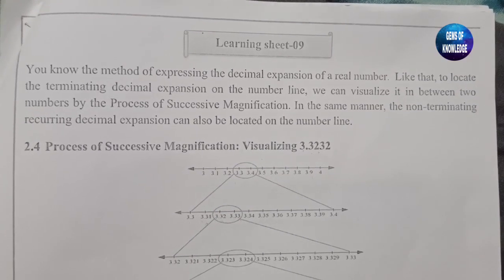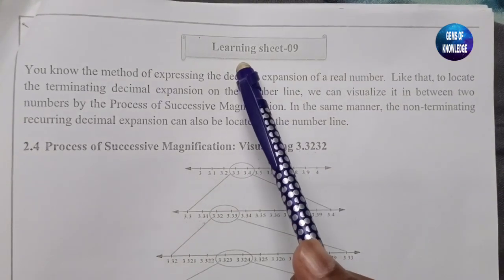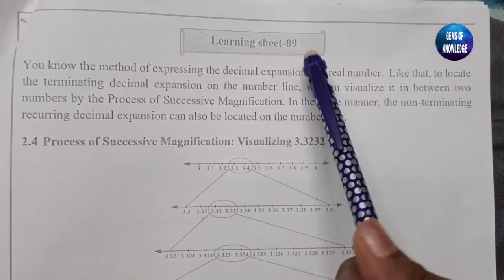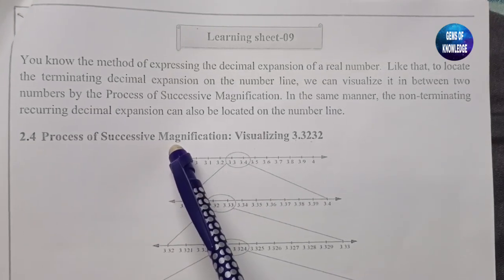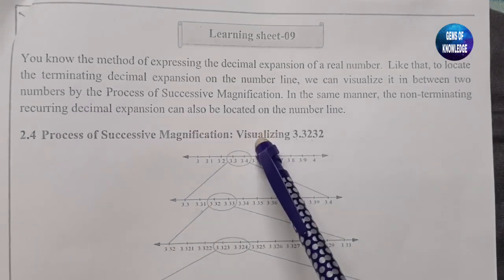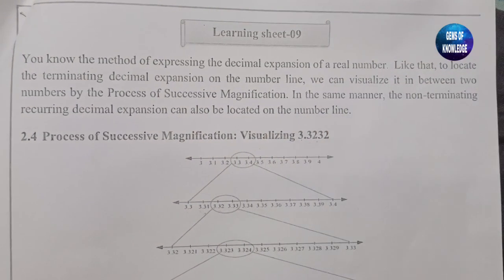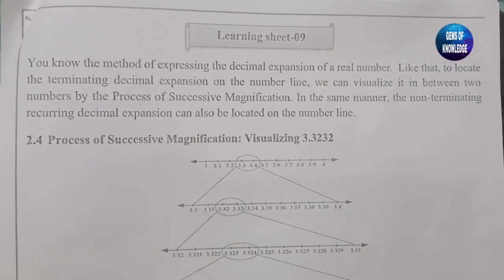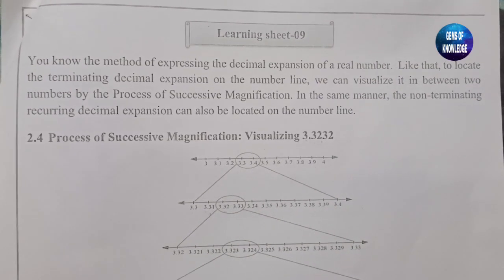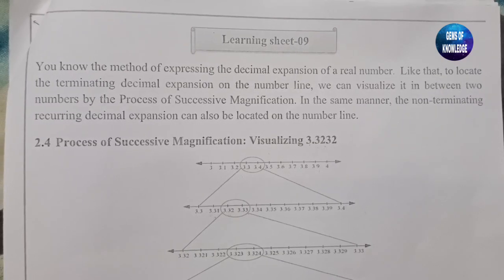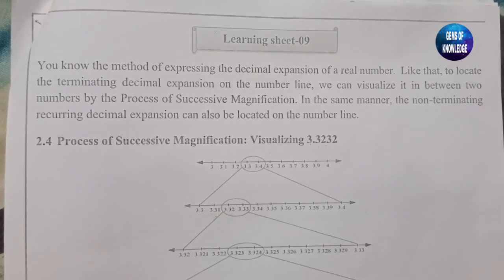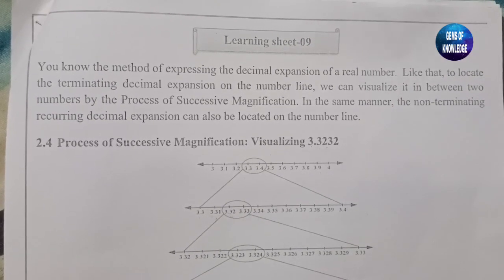Hello everyone, welcome back to my channel Gems of Knowledge. Today we are going to learn Learning Sheet number 9, that is the process of successive magnification — visualizing numbers. Before we start, make sure you subscribe to my channel and click the bell button to get my videos as soon as I post them.